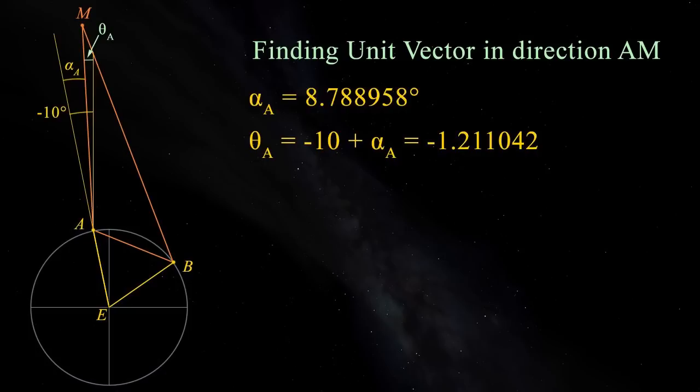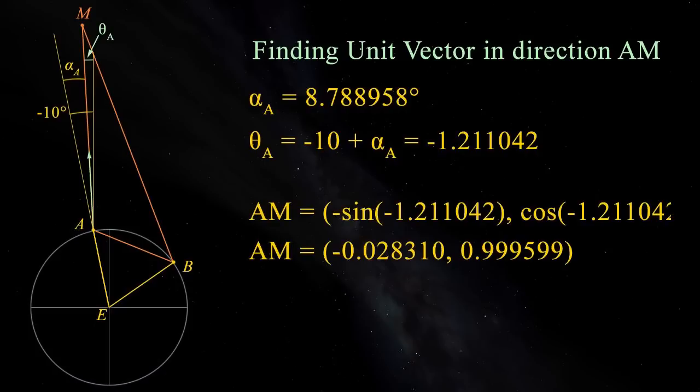This gives an angle theta A of minus 1.211042 degrees. Now that we have this, we can get a unit vector in the direction AM. Remember a unit vector has a length of 1, so this vector will simply be sin theta A cos theta A, which works out as minus 0.028310, 0.999599.